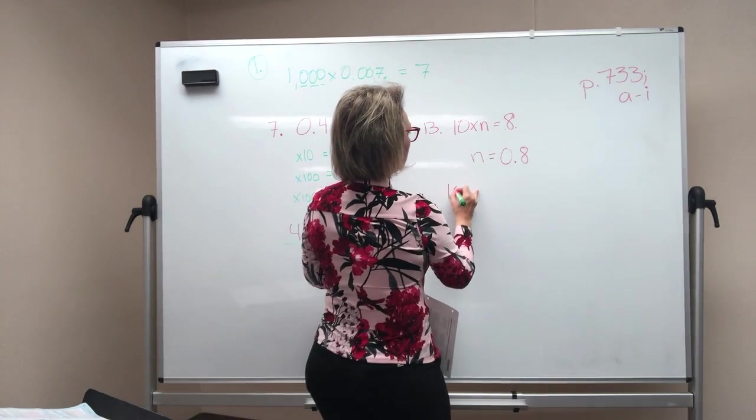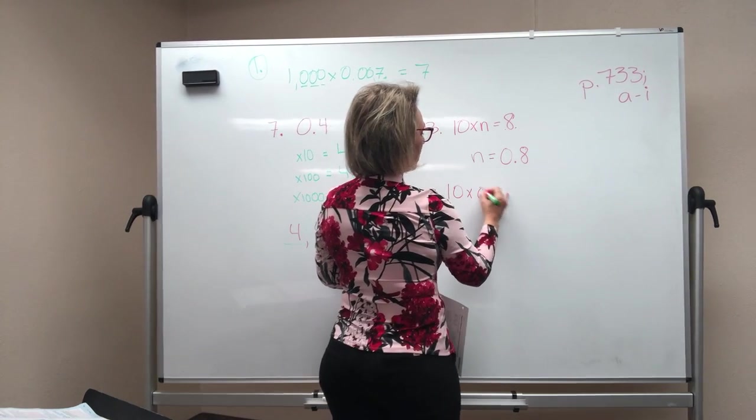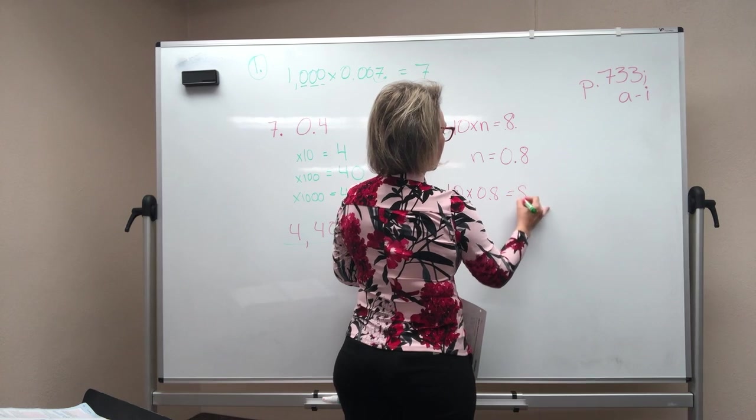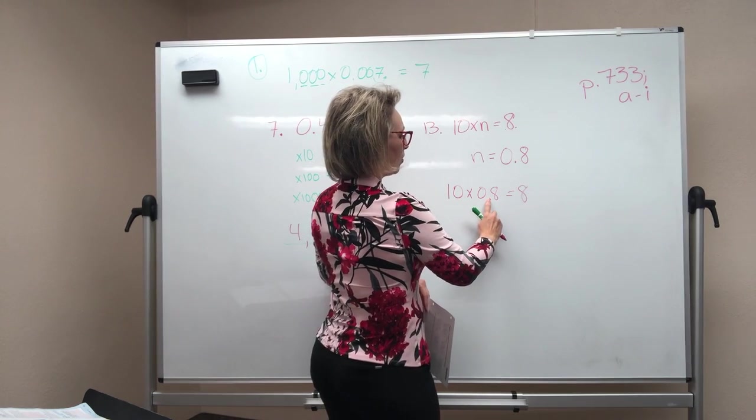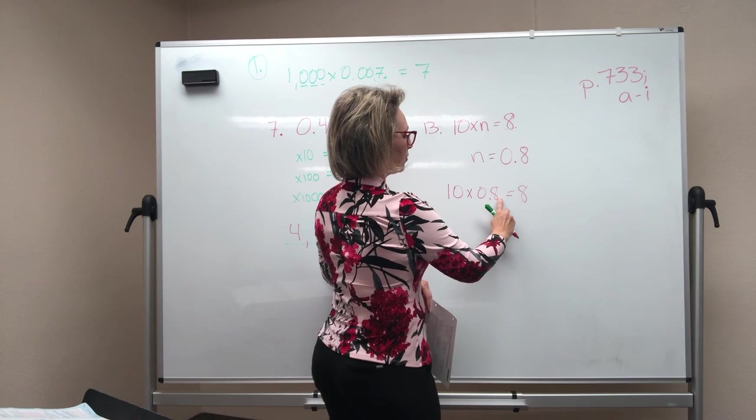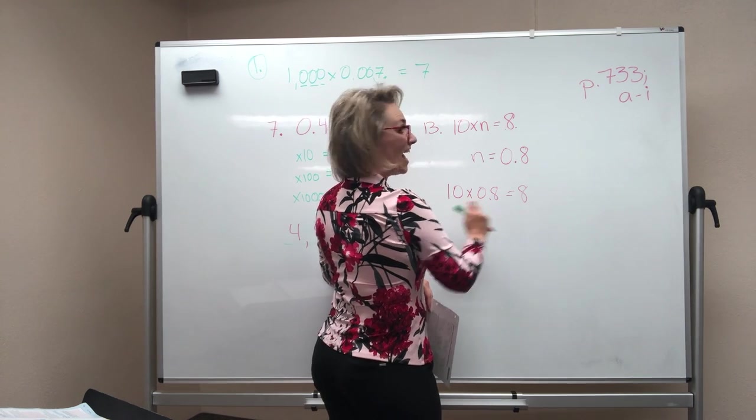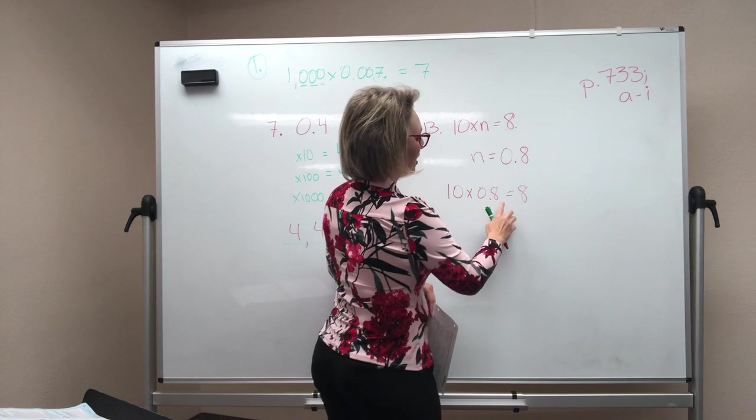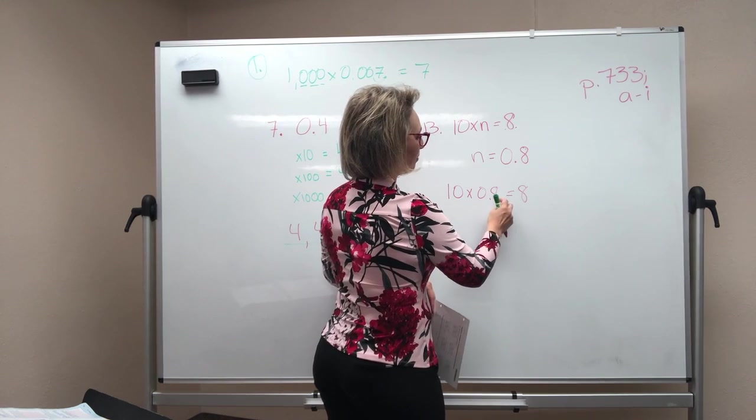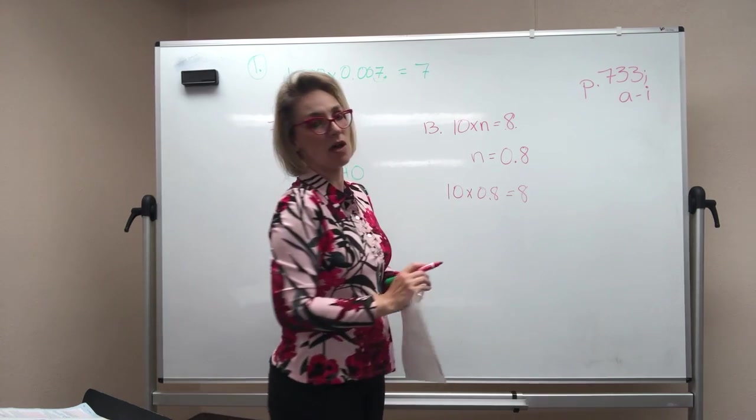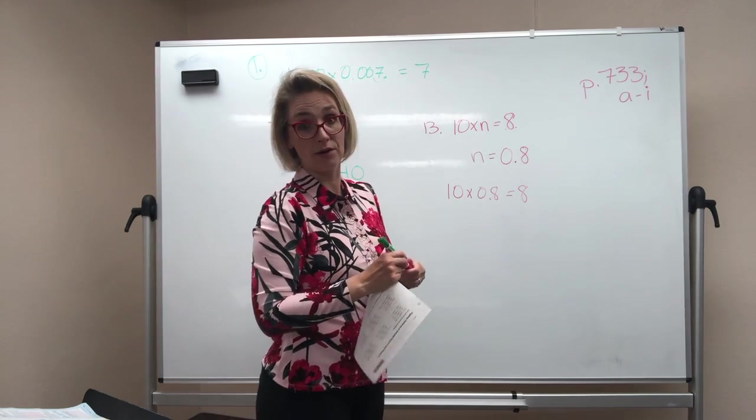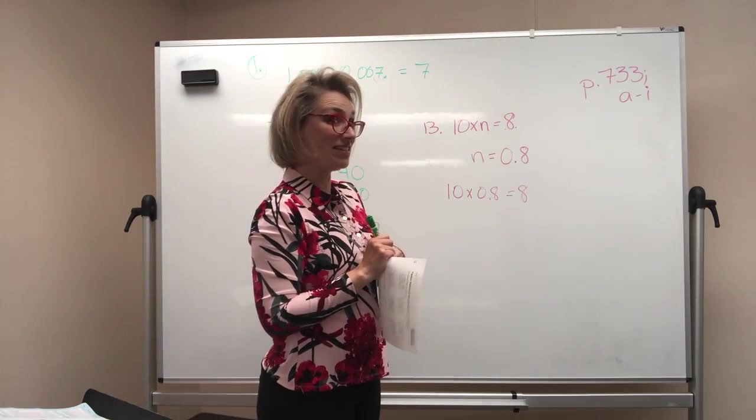Is it true that 10 times 0.8 equals eight? Is that true? 10 has one zero on it. So we move it to the right one and there it is over to the right of the eight. And that is true. 10 times 0.8 equals a plain eight with the decimal after the eight. Remember that zero just drops off there. It doesn't matter. Makes sense.